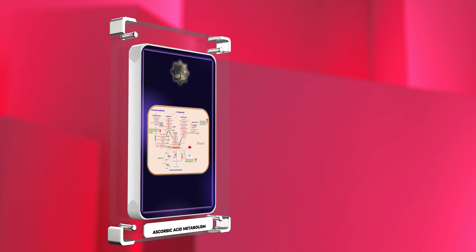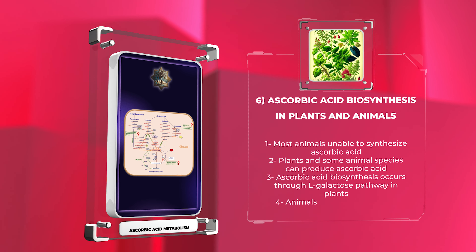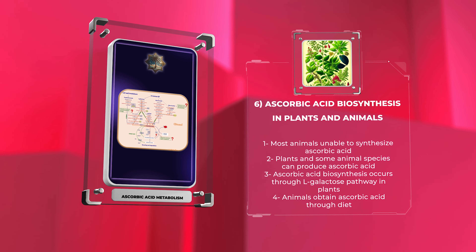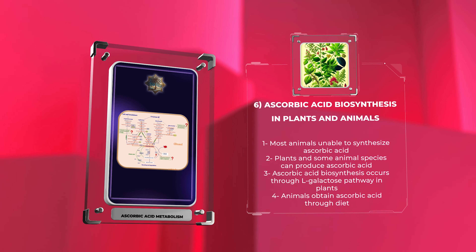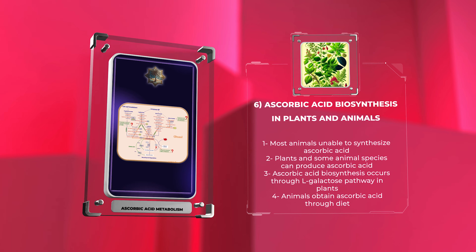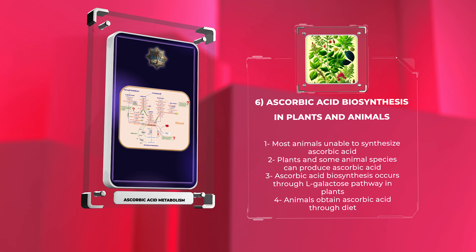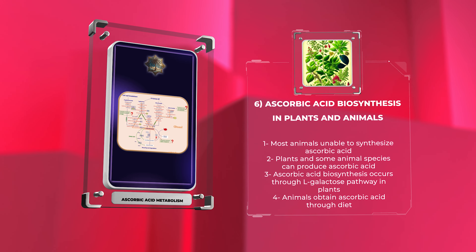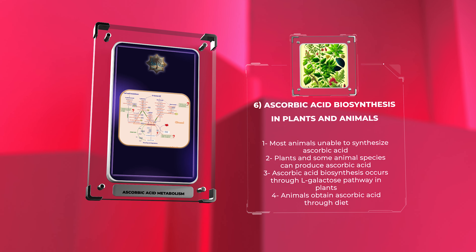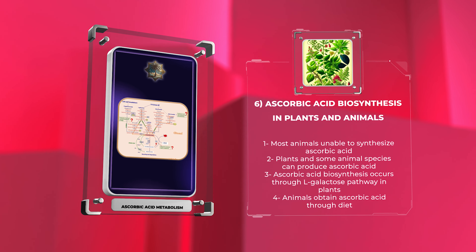While most animals lack the ability to synthesize ascorbic acid, plants and some animal species can produce this vital molecule. In plants, ascorbic acid biosynthesis occurs mainly through the L-galactose pathway, involving multiple enzymatic steps. This pathway begins with the conversion of glucose to L-galactose, and further modifications lead to the formation of ascorbic acid.